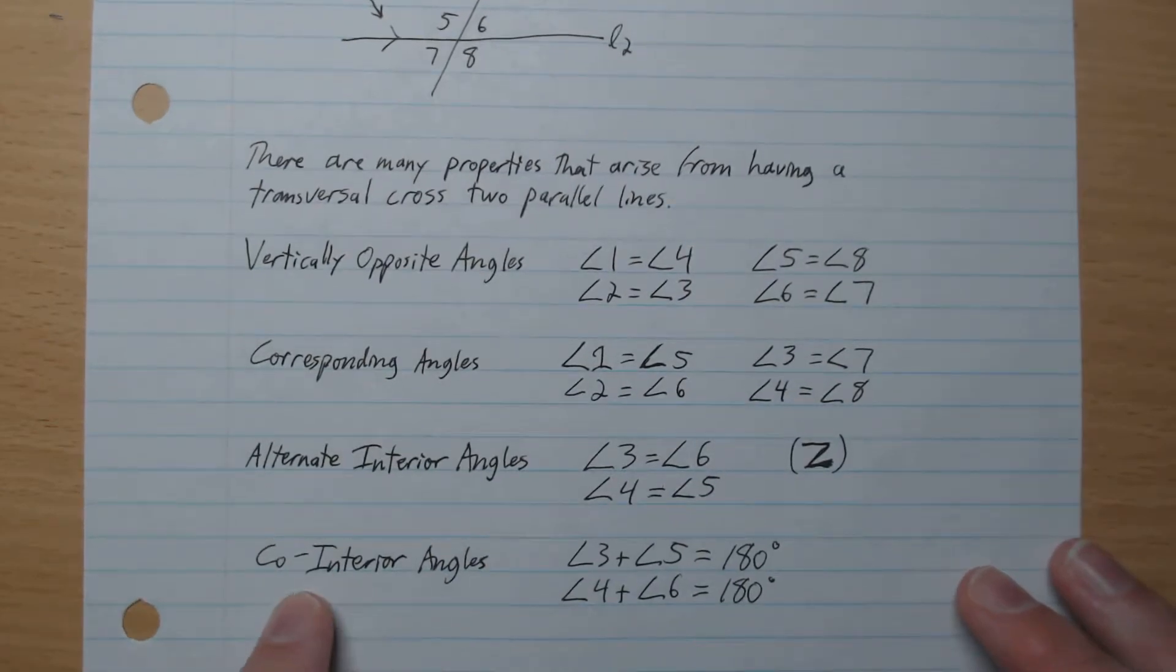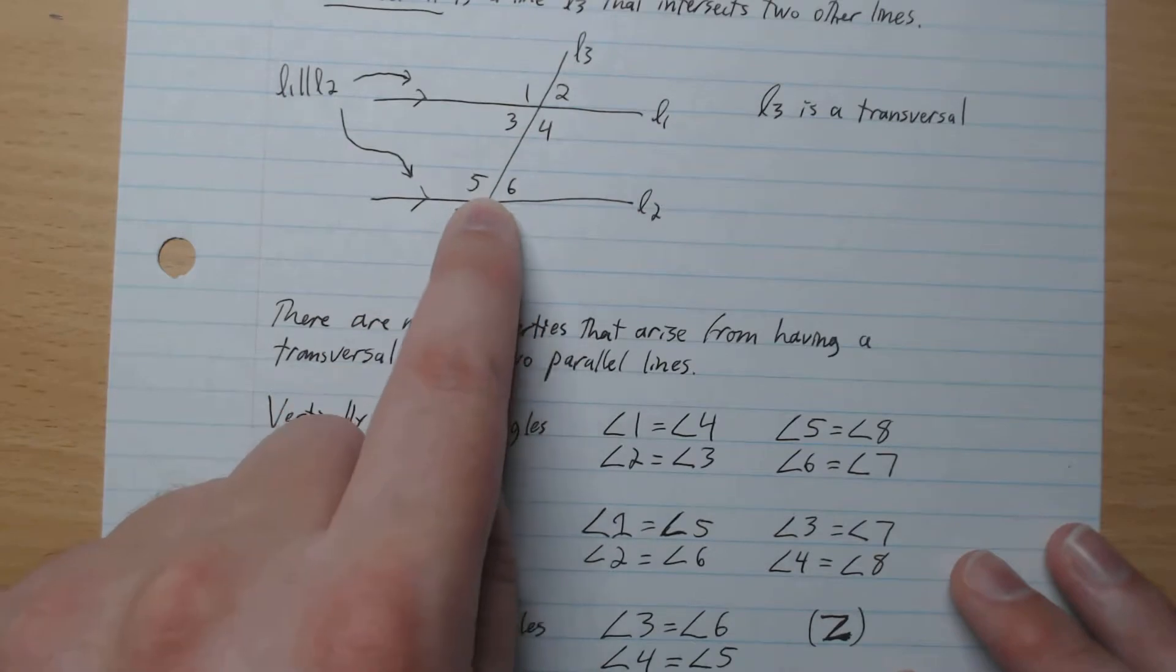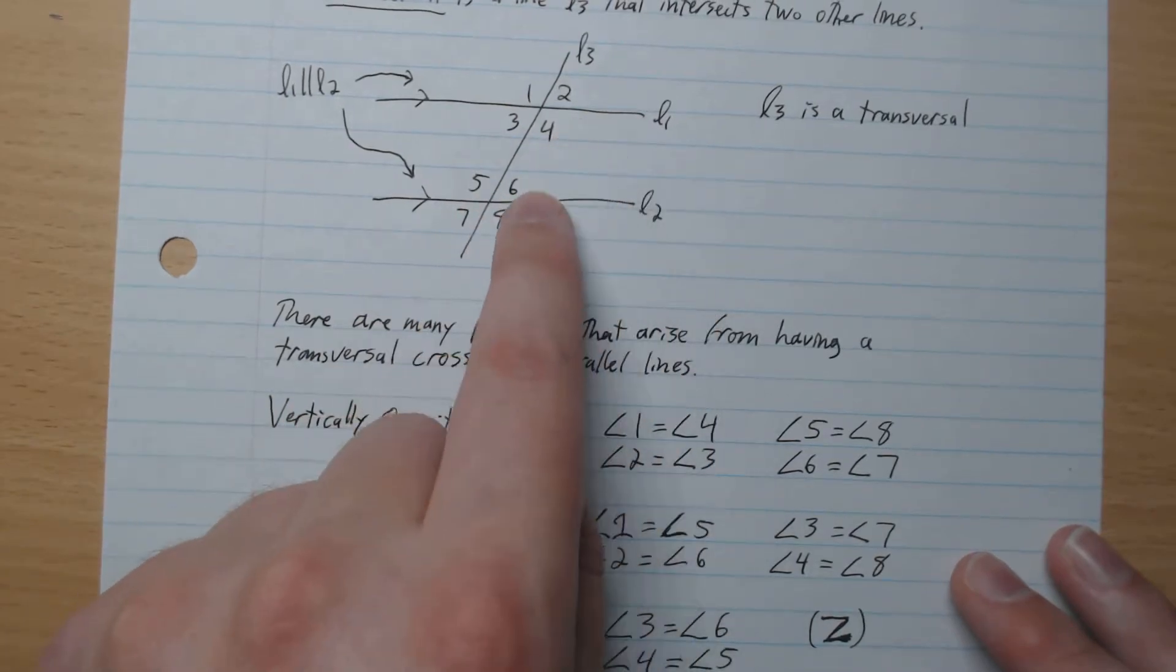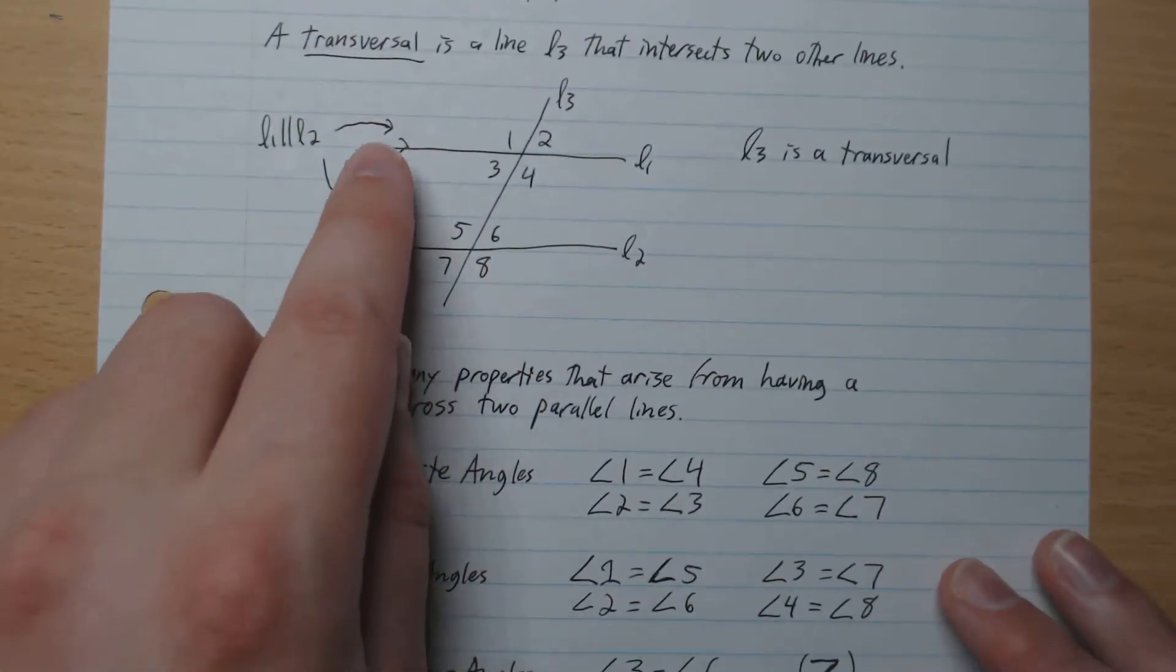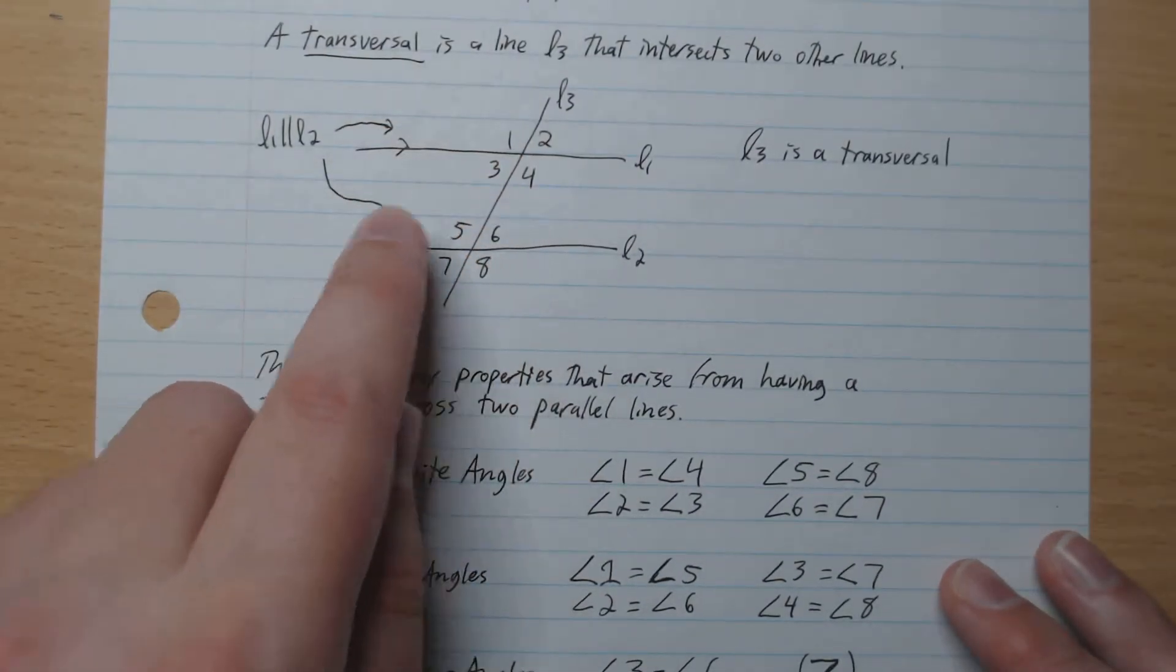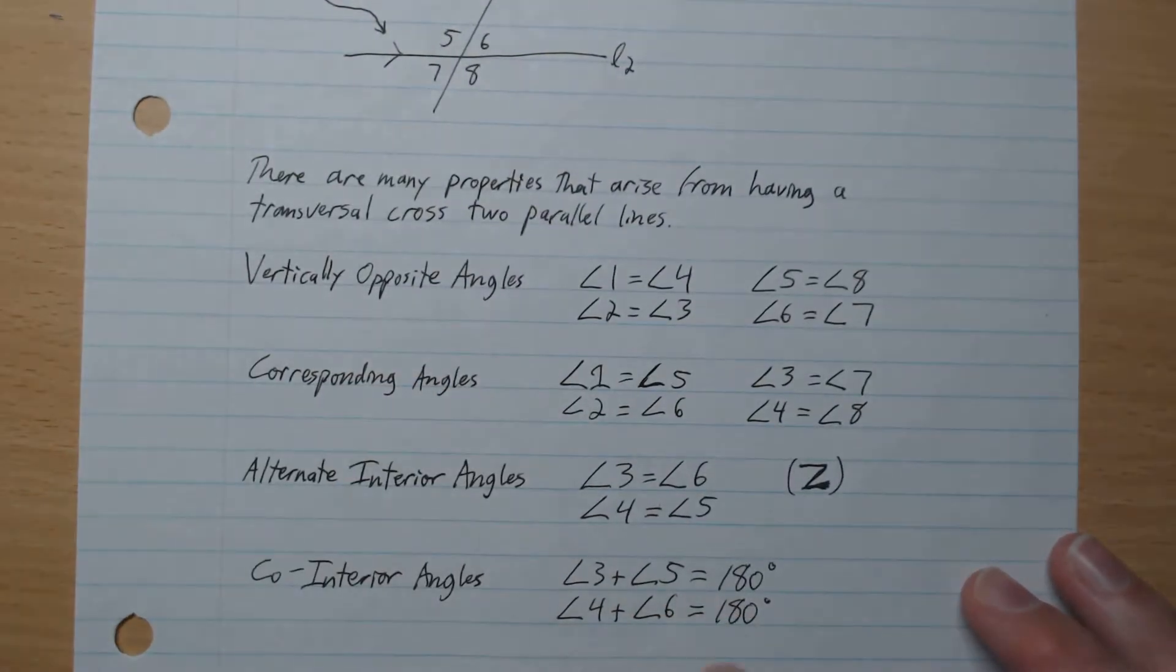Last one, it's called co-interior angles. So you see this little C here. 4 and 6 add up to 180. Same thing here, this little C like that. 5 and 3 add up to 180.